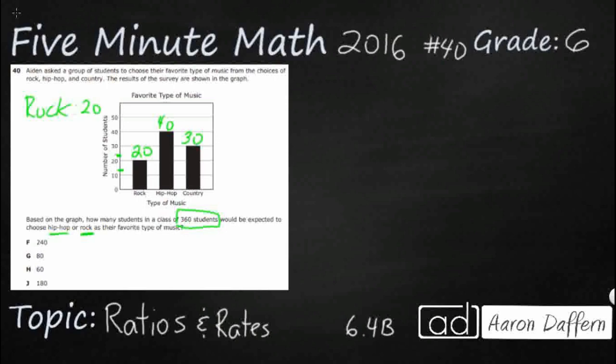That's 20. And then hip hop, I'll just put HH. That's 40. Look at that. 40 and 20, that makes 60, there's my answer, H. That is incorrect.